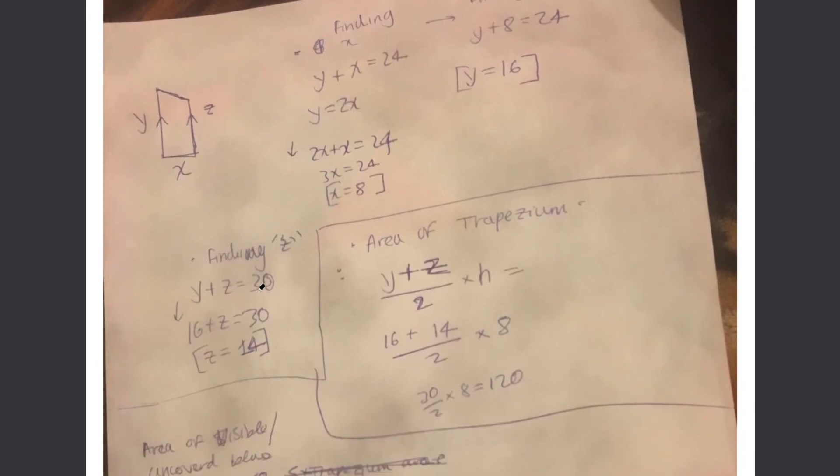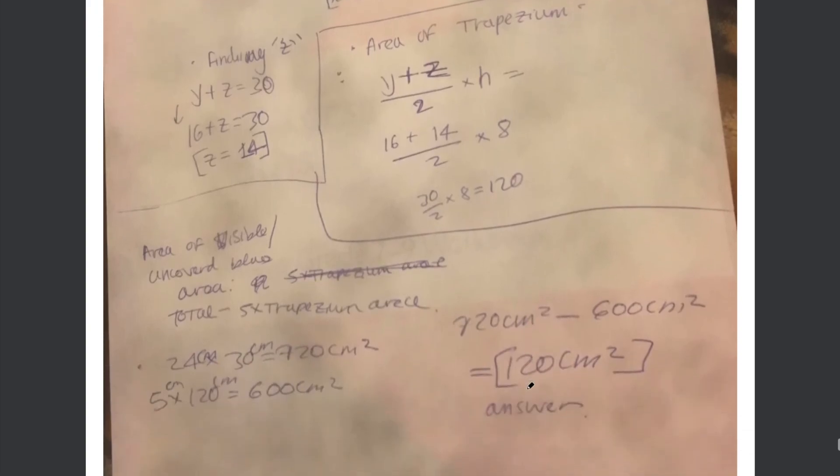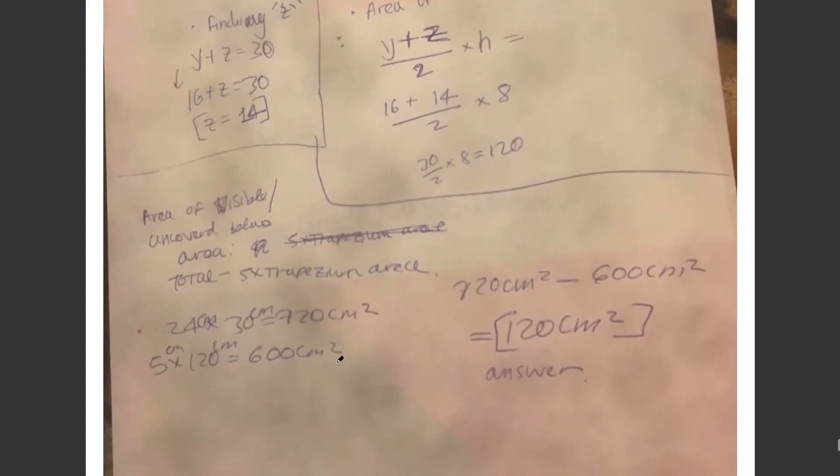Great. And then y plus z equals 30. The long side of the rectangle. Therefore z equals 14. Fantastic. He's got his three variables. Then he's worked out the area of one trapezium. 120. And then he has worked out the area of five trapezia. Worked out the total area of the rectangle. Subtracted them and got 120 for the answer. Fantastic.